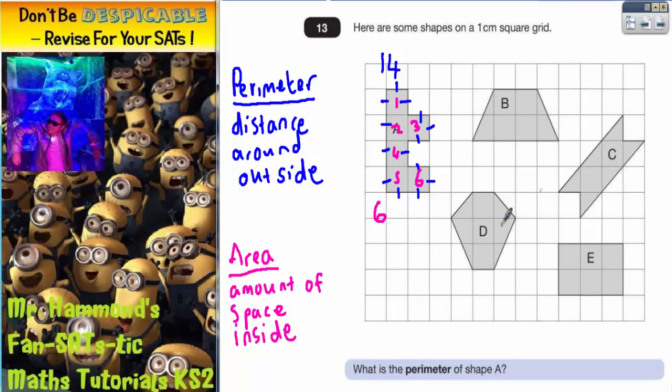Shape B, C and D are going to be a bit tricky. So let's do the easy ones first. So shape E is 1, 2, 3, 4, 5, 6. So shape E is also 6.